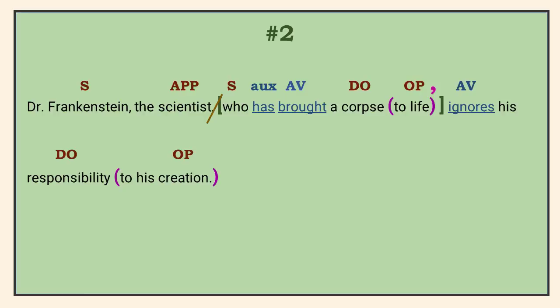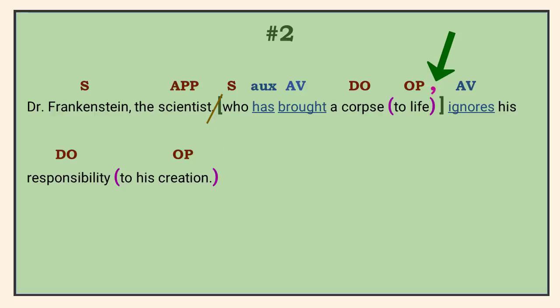Number 2. The appositive 'scientist' provides extra information about Dr. Frankenstein, so it is non-restrictive and needs commas on both sides. This appositive is modified by a restrictive relative clause, however, so we don't put the comma between the appositive and its dependent clause. It goes at the end of the entire appositive — the main word and all its modifiers, including a clause. Remember that relative clauses can modify any noun or pronoun in the sentence, including appositives and objects of prepositions.